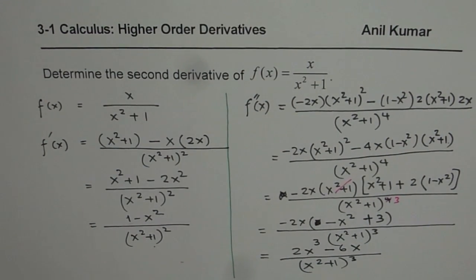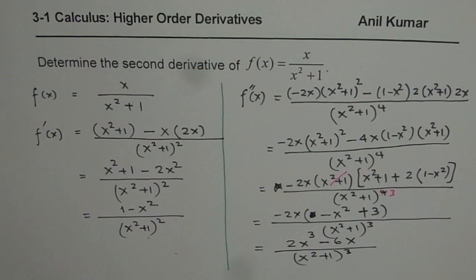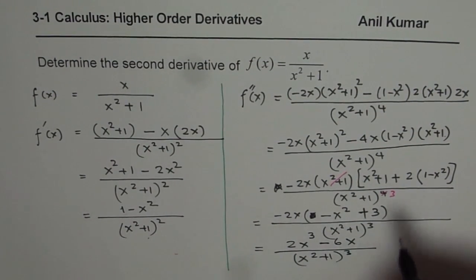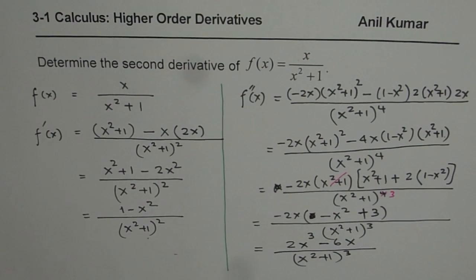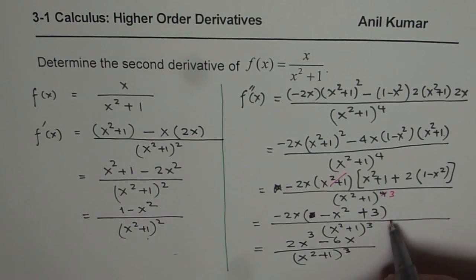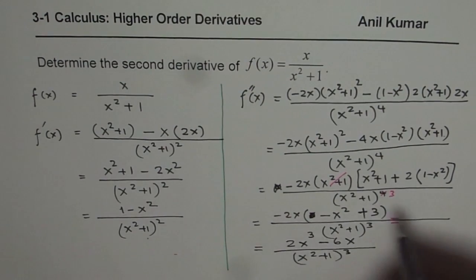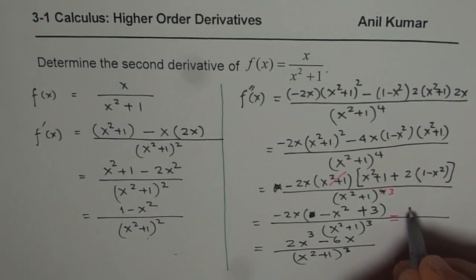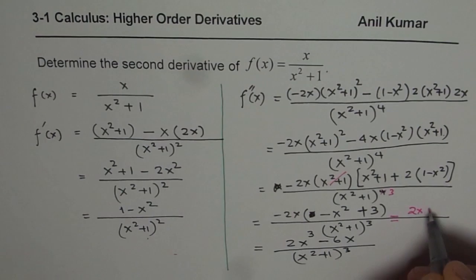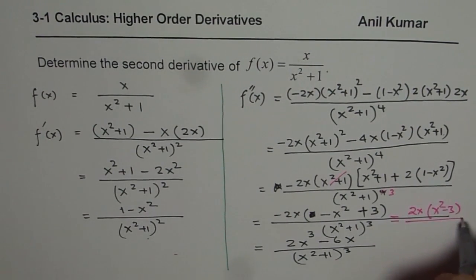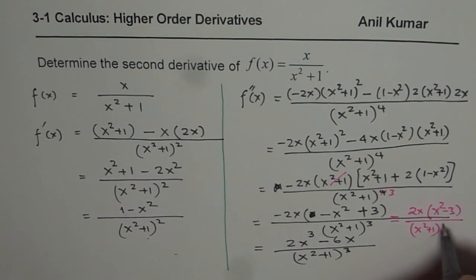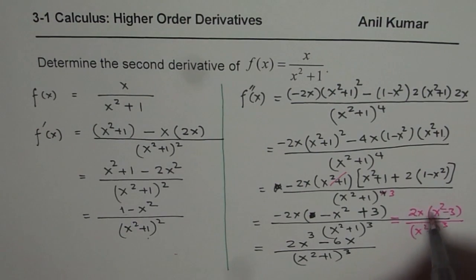So that could be the form in which you write the answer. You could also factor this further — taking minus outside looks better — and write it as 2x times (x squared minus 3) divided by (x squared plus 1) cubed. This is the final answer.